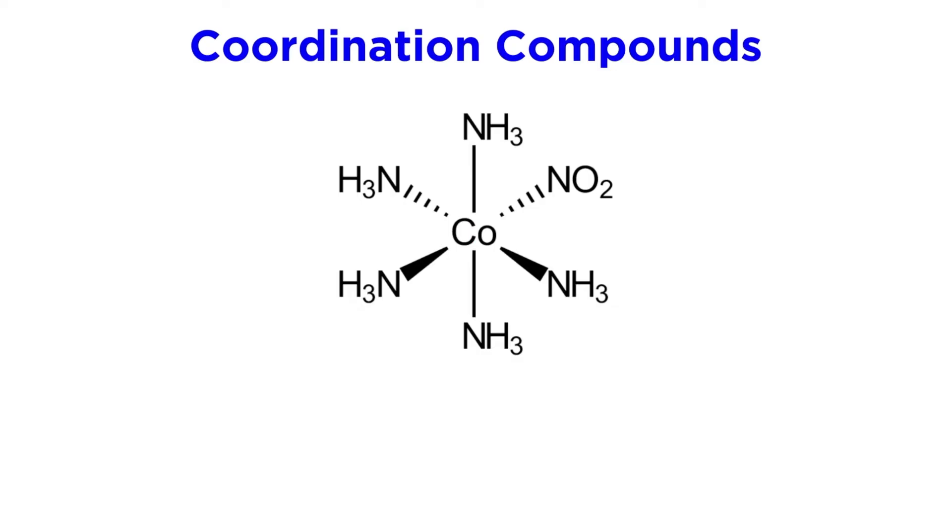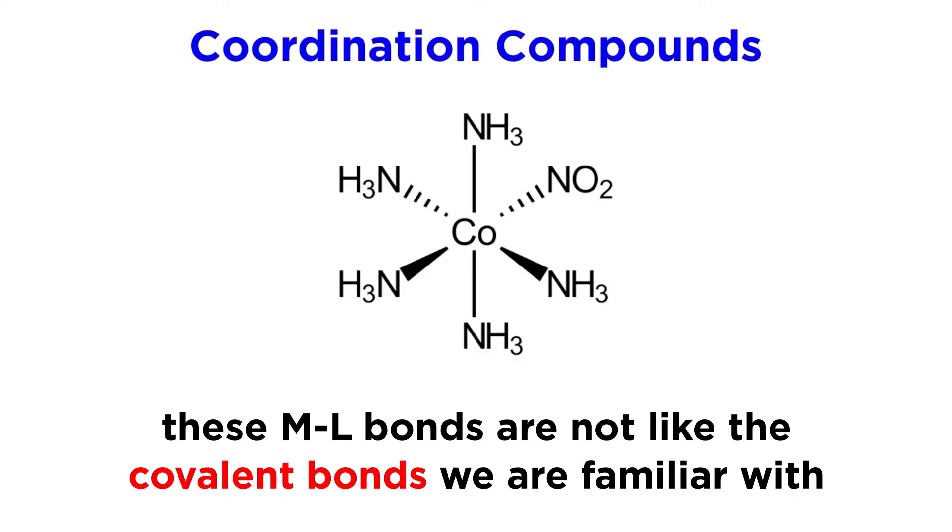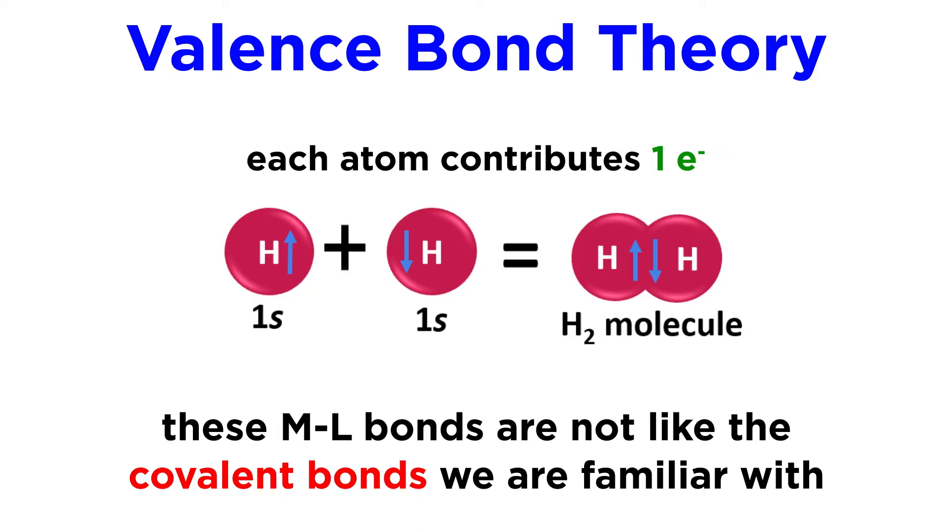The first thing we need to discuss is the types of bonds that can occur between a metal and a ligand. One would be tempted to look at the bond between a metal and a ligand as a normal covalent bond, which, as we know, according to valence bond theory, is a situation where each of them contributes one electron to the bond, and the orbital overlap is what creates the bond.